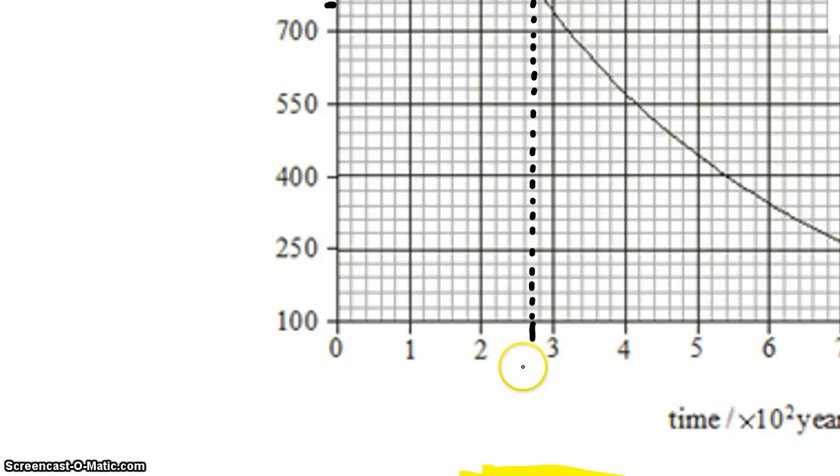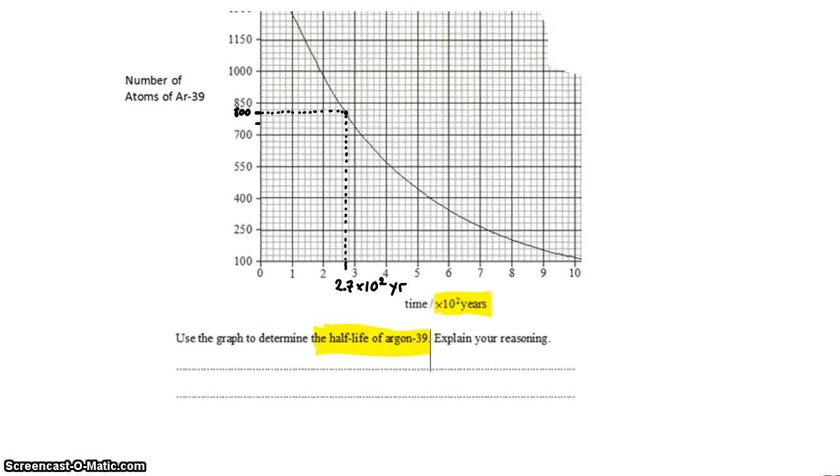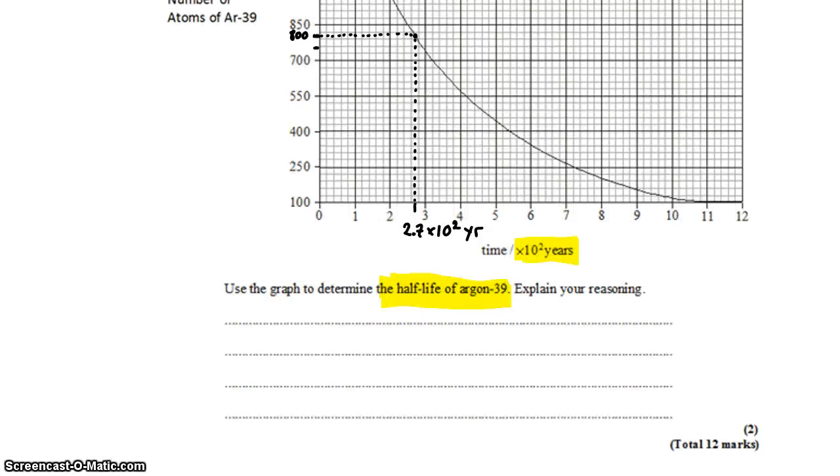So we'll call that maybe 2.7 times 10 to the two years. Always remember to check the scale. So that's the result. It takes 2.7 times 10 to the two years for half of the sample to decay.